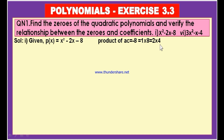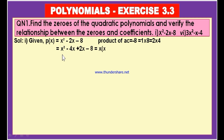How can you write 8 as the product of two numbers? You can write 8 either as 1 into 8 or as 2 into 4. Since the product has a minus sign, the difference of the factors should be equal to the coefficient of x, which is minus 2. The difference of 1 and 8 is not equal to 2, but the difference of 2 and 4 is equal to the coefficient of x. Therefore, let us write minus 2x as plus 2x and minus 4x. So x squared minus 2x can be written as x squared minus 4x plus 2x minus 8.